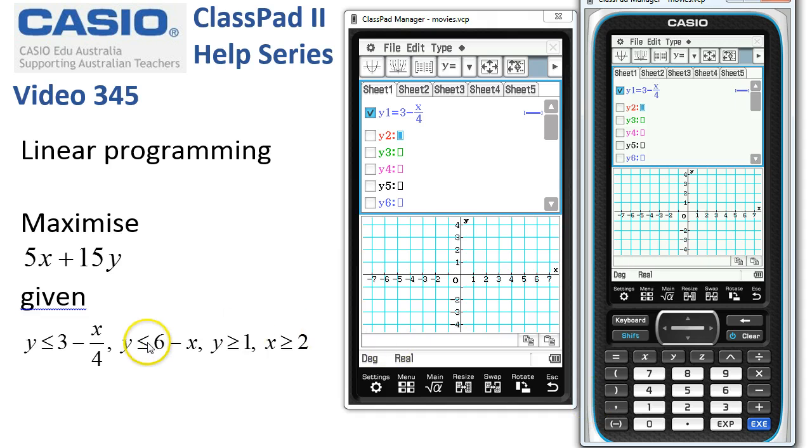The next one is y equals 6 minus x, tap execute. The next one, y equals 1, so I just pop 1 in there.